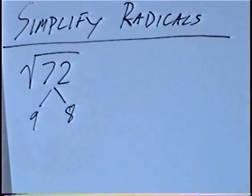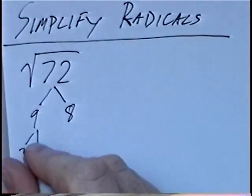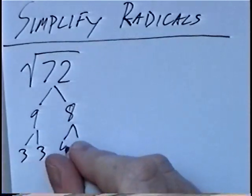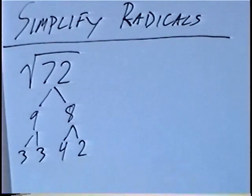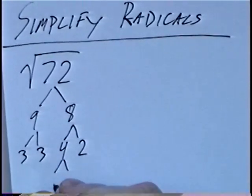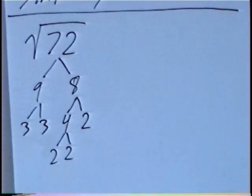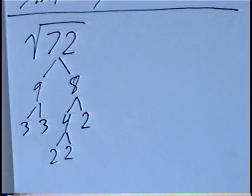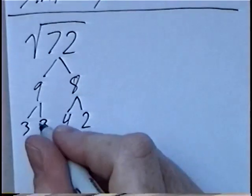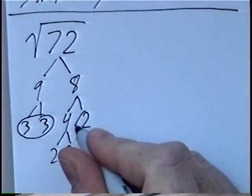Factoring down the rest of the factor tree: 9 would be 3 times 3, and 8 would be 4 times 2. We can continue to factor where possible — the 4 we can factor to get 2 times 2. Finding the pairs, since it's a square root, we're looking for pairs of numbers. We have a pair of 3s and also a pair of 2s.